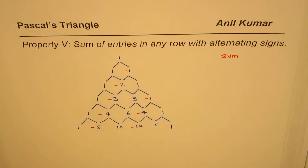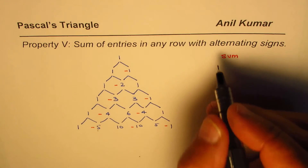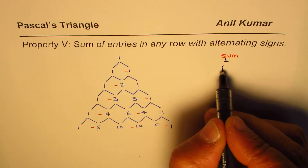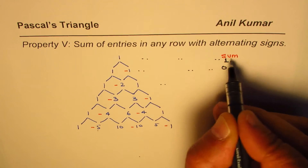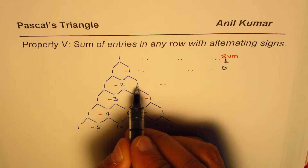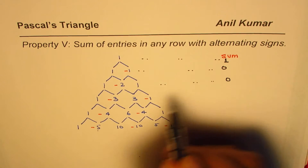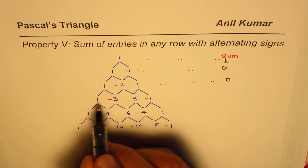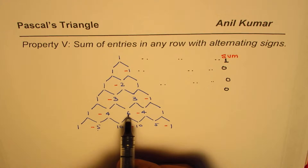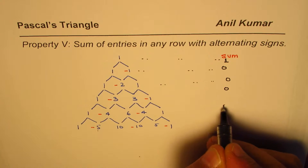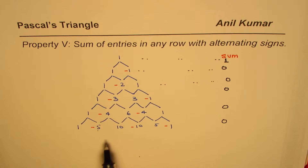For the very first row there is only one entry, so the sum is one. For the next row, one minus one equals zero. Then one minus two plus one gives two minus two, which is zero. One minus three plus three minus one is also zero. For the row with one, four, six, four, one: the positive entries sum to one plus six plus one equals eight, and the negative entries four plus four equal eight, so the result is again zero.